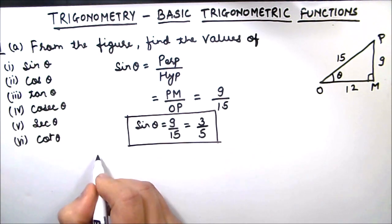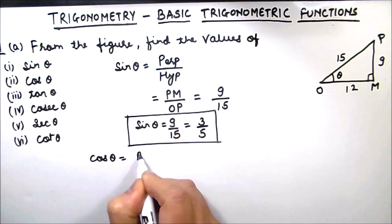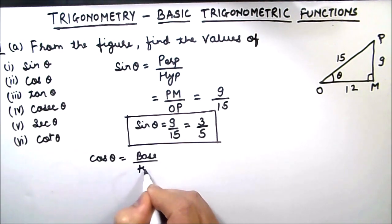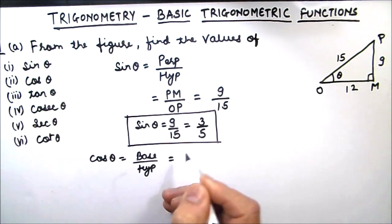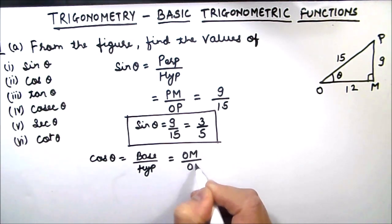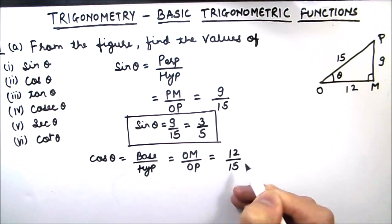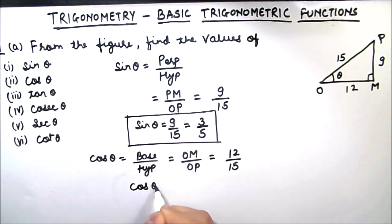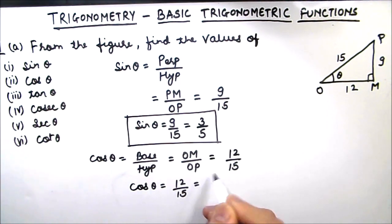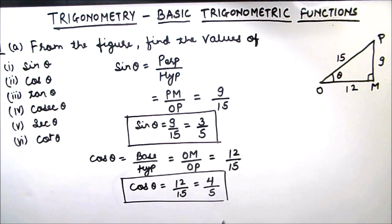Next we will find cos theta. Cos theta is base over hypotenuse. So base is OM and hypotenuse is OP, so this is 12 over 15. Cos theta equals 12 over 15, which can be reduced as 3 times 4 over 3 times 5, giving us 4 by 5. So this is cos theta.